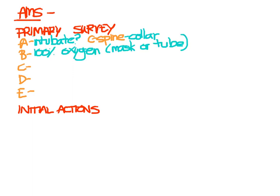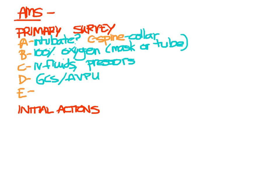For circulation, remember that hypoperfusion of the CNS can result in altered mentation, so treat circulatory collapse appropriately. Put two IVs in, start IV fluids, and give pressors as needed. D stands for disability — a quick neurologic exam using your GCS or AVPU score. Look for movement on both sides of the patient; if they're not moving one side, this could be a stroke or spinal cord injury.